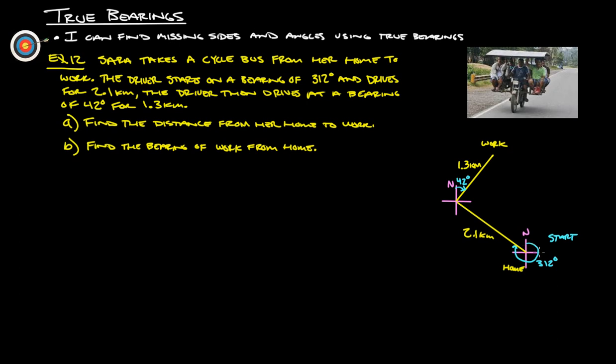Here's true north. 90, 180, 270, somewhere up here roughly is 312 for 2.1 kilometers. And then they headed on a bearing of 42 degrees, we do this right here, 42, and then we're heading up this way for 1.3 kilometers up until work. This is the end of the trip. Find the distance from her home to work. So here's where she started, which is home, and then there's work. We are trying to find this distance right here.